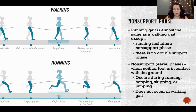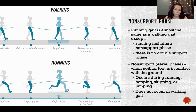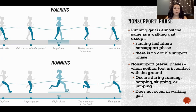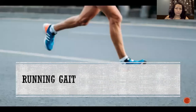The non-support phase is also called the aerial phase because we're in the air — it's when neither foot is in contact with the ground. We have a non-support phase in running, hopping, skipping, or jumping, but we do not have it during walking gait.